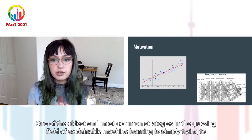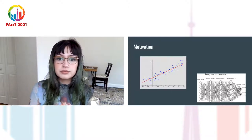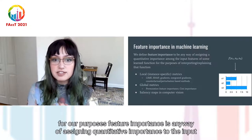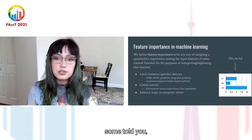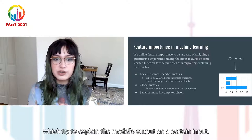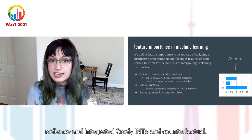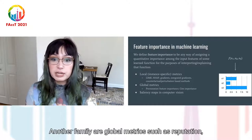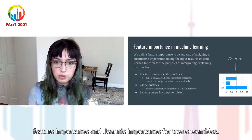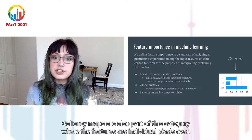One of the oldest and most common strategies in the growing field of explainable machine learning is simply trying to quantify the relative effects of each of the model's input features. Feature importance is any way of assigning quantitative importance to the input features of some learned function for the purposes of interpreting or explaining that function. Some tools include local or instance-specific metrics such as LIME, SHAP, gradients and integrated gradients, and counterfactual explanations. Another family are global metrics such as permutation feature importance and Gini importance for tree ensembles. Saliency maps are also part of this category, where the features are individual pixels of an image.